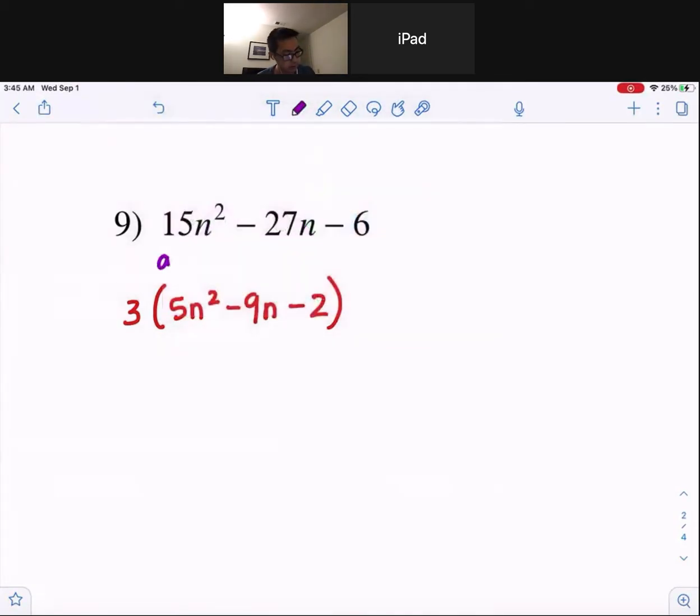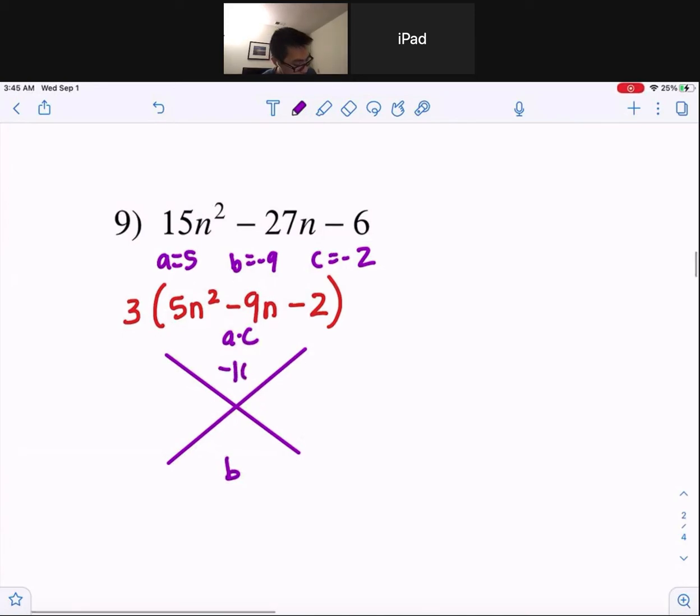Now, we can denote a is 5, b is negative 9, c is negative 2. a times c up top, b on the bottom. Our a times c, you guys, is negative 10. Our b is negative 9. The two numbers that multiply to negative 10, but when added gives you negative 9, that is negative 10 and 1.